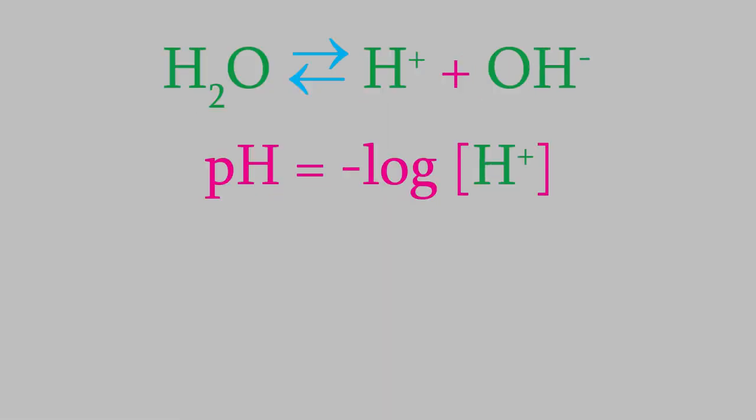Another way we can measure how acidic or basic a solution is, is by looking at the hydroxide concentration instead of the hydrogen ions. If we do that, we can use the pOH instead of the pH. Just like the pH, the pOH is the negative logarithm of the hydroxide concentration. Notice that because pure water dissociates to give equal numbers of hydrogen and hydroxide ions, that means the pOH of water will be exactly the same as the pH. So, the pOH is 7.